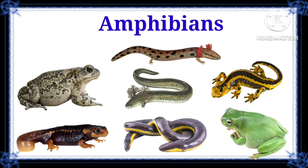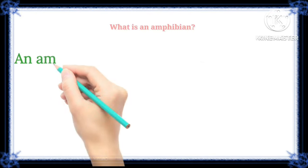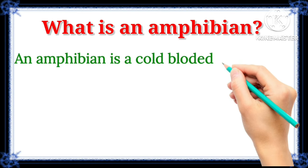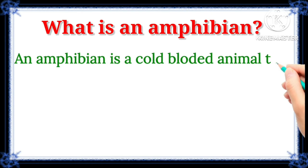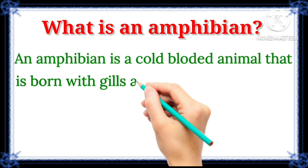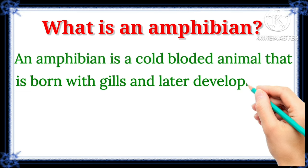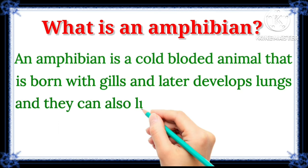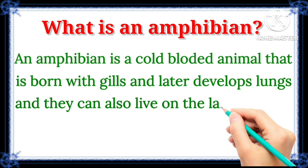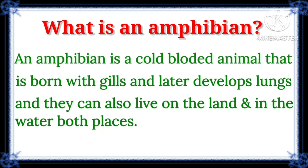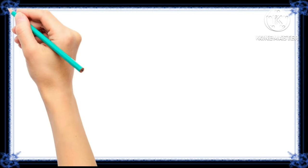Dear kids, today we will see amphibians. Do you know what is an amphibian? An amphibian is a cold-blooded animal that is born with gills and later develops lungs, and they can also live on the land and in the water both places. Let's begin.